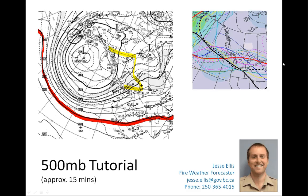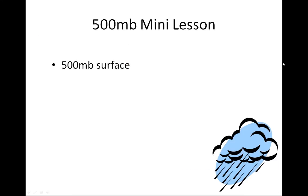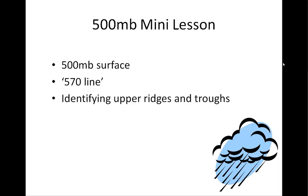Welcome to the tutorial for the 500 millibar chart. My name's Jesse Ellis — I'm a fire weather forecaster, and over the next 15 minutes or so, we're going to be looking at what exactly is meant by the 500 millibar surface. The famous 570 line is a term thrown around during most fire weather briefings, and hopefully we'll be able to shed some light on what that is and what it can and can't tell us. Then we're going to look at how to identify upper ridges and troughs and link that into the kind of weather we can expect on the ground.